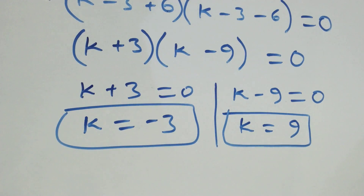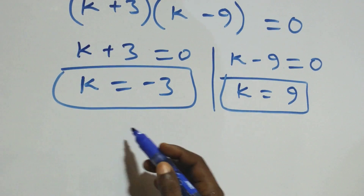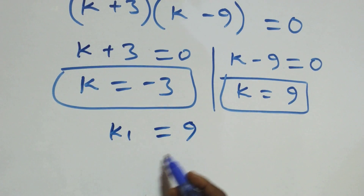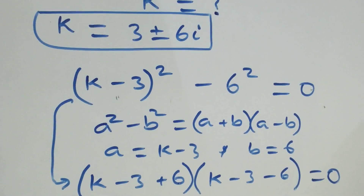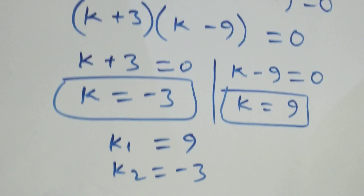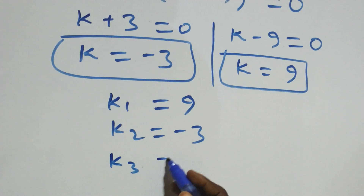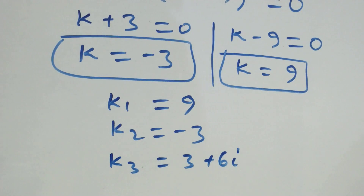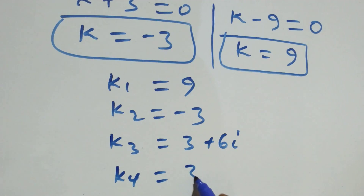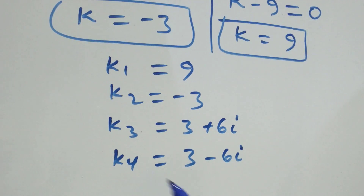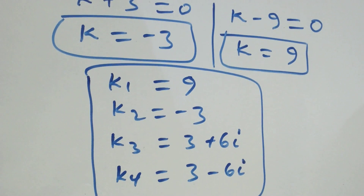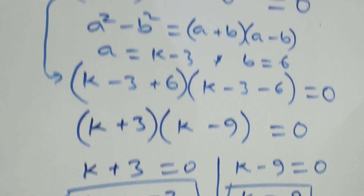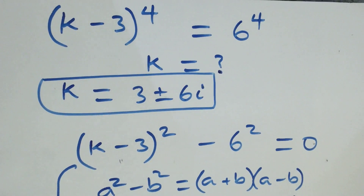In total we have two real solutions and two complex solutions. k1 equals 9, k2 equals minus 3, k3 equals 3 plus 6i, and k4 equals 3 minus 6i. That gives us four solutions altogether — two real and two complex. Thank you for watching; don't forget to subscribe, turn on the notification bell, share this video, and leave your comments. See you next class, bye for now.